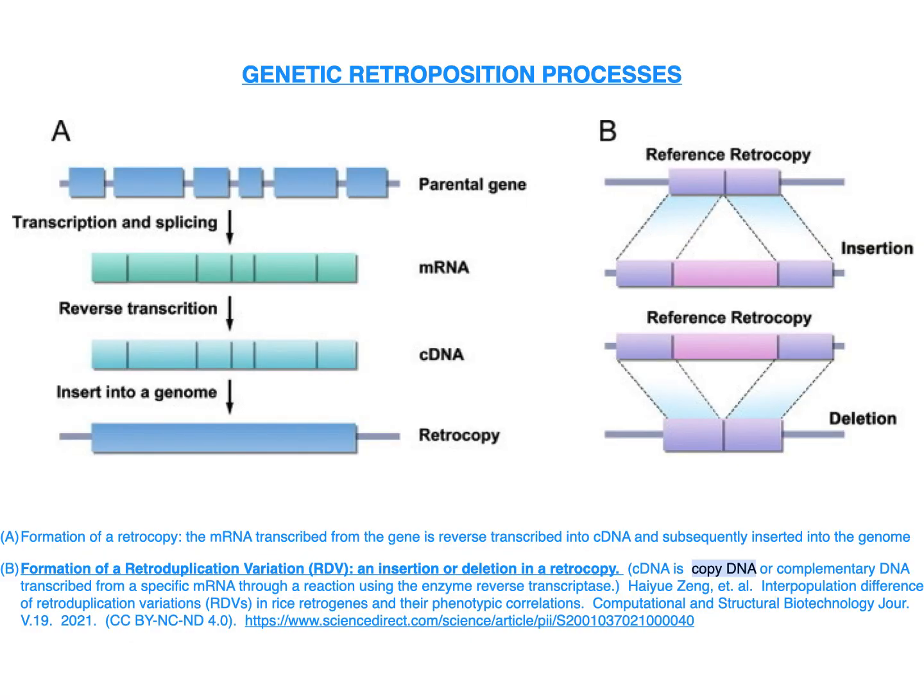Genetic retroposition processes: A. Formation of a retrocopy — the mRNA transcribed from a gene is reverse transcribed into cDNA and subsequently inserted into the genome. B. Formation of a retroduplication — variation and insertion or deletion in a retrocopy.